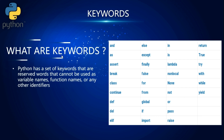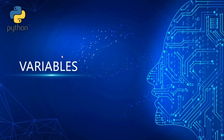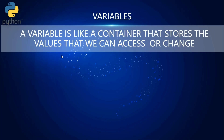A variable is like a container that stores a value, which you can access or change. For example, imagine you have a container at home storing rice — whenever you want the rice, you open the container and use it. Later, you could store something else like fenugreek seeds in the same container. Similarly, a variable is a container whose value you can access or change anytime in the program.